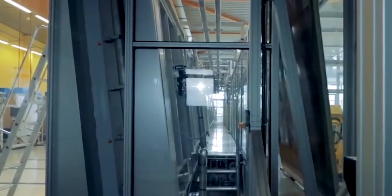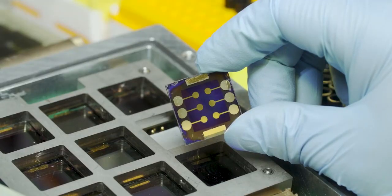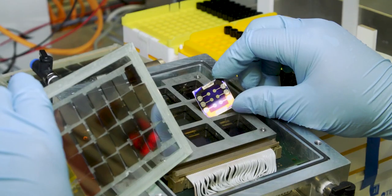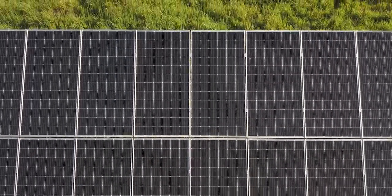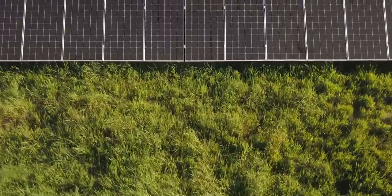Early perovskite devices degraded rapidly, becoming non-functional within minutes or hours. Multiple research groups have now demonstrated lifetimes of several months of operation for commercial grid-level electricity production.